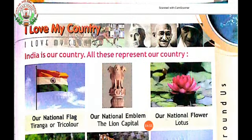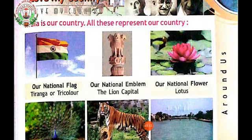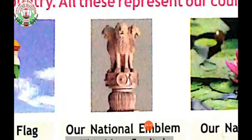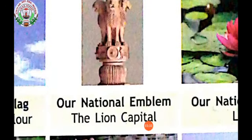Now come to the next page — that is, I love my country. Children, now we are going to learn about the different national symbols of the country. What is this, children? This is our national flag. The name of the flag is Tiranga or Tricolor. Now come to the next picture — what is this? This is our national emblem, the Lion Capital.